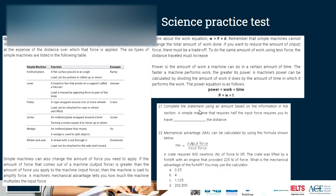Question 21: a simple machine that requires half the input force requires you to travel what distance? Since work equals force times distance and the total work remains the same, if the input force is half the output force, the distance traveled must be double. So you travel double the distance.